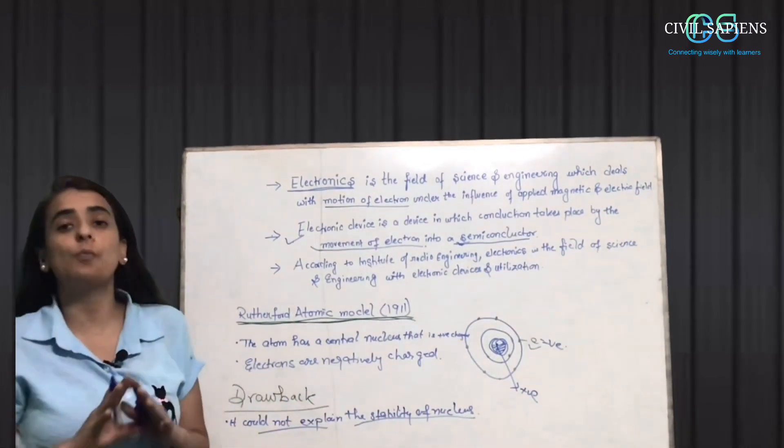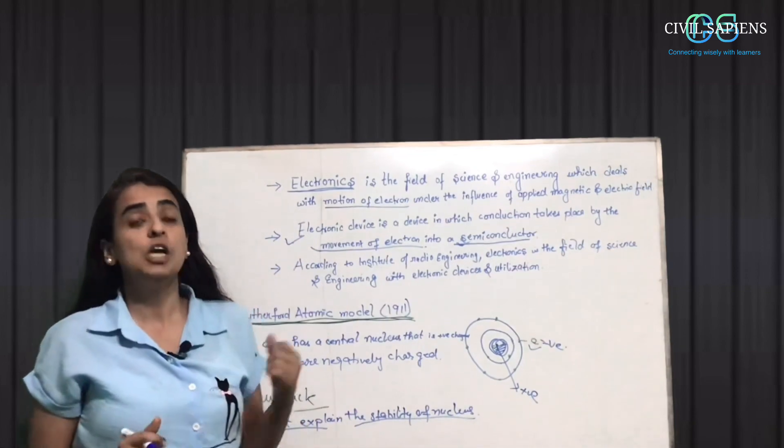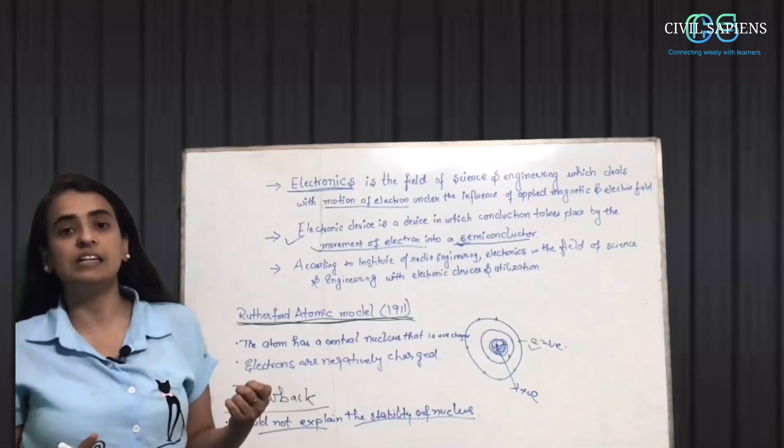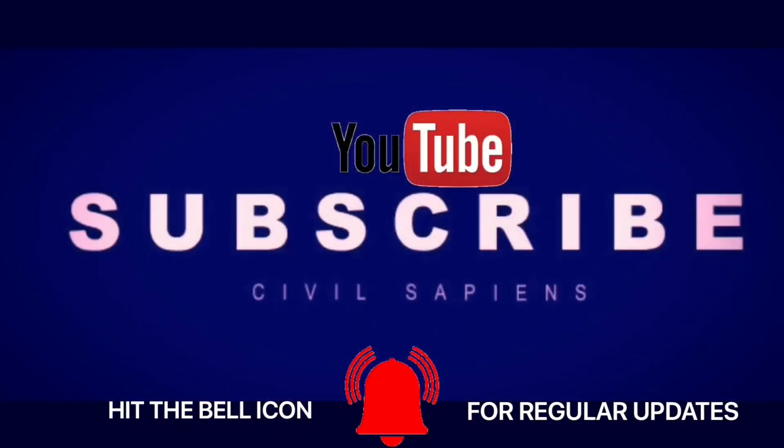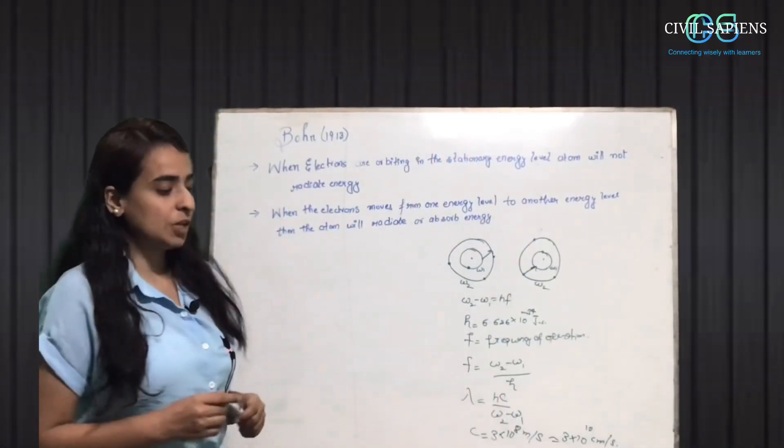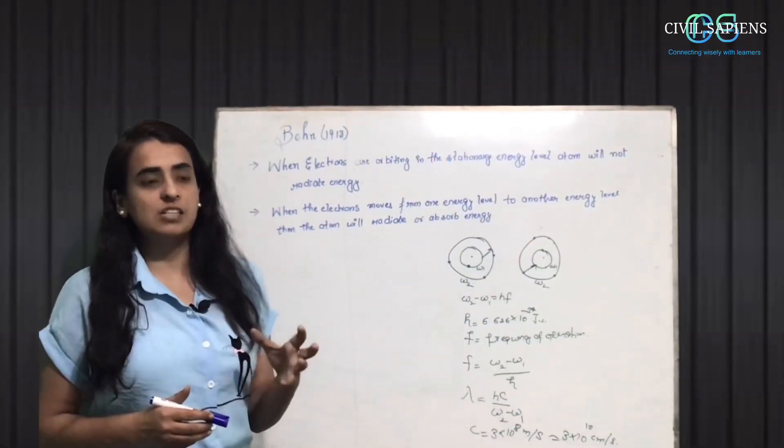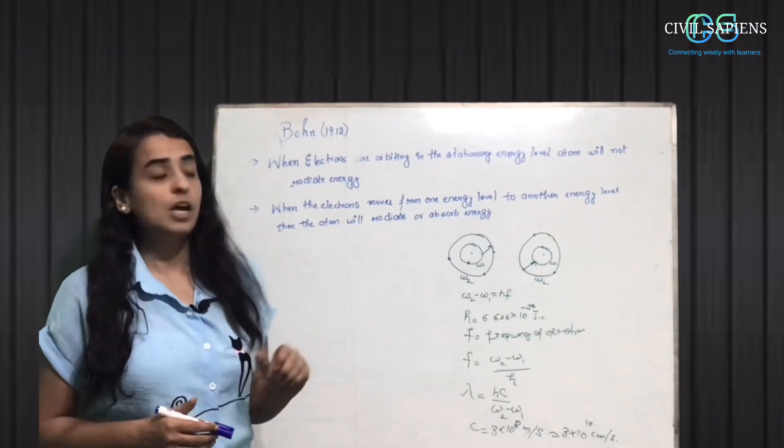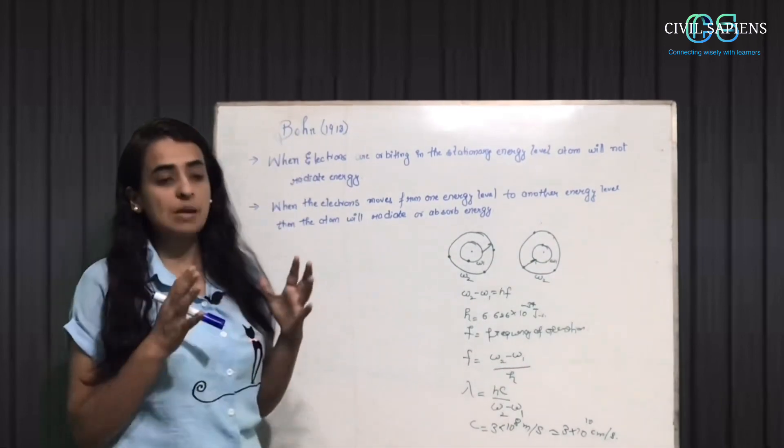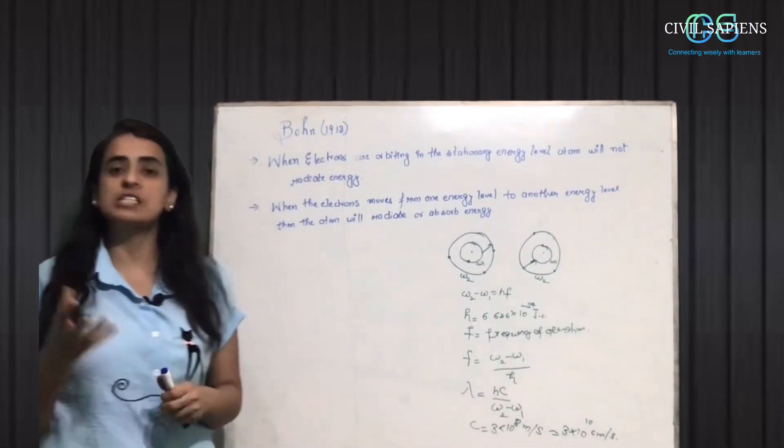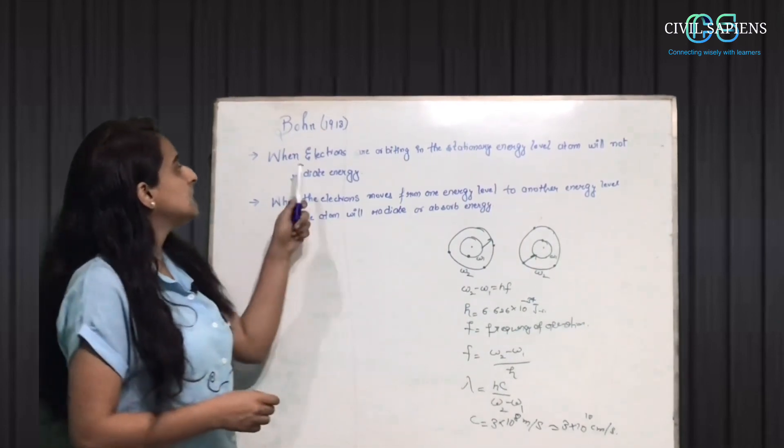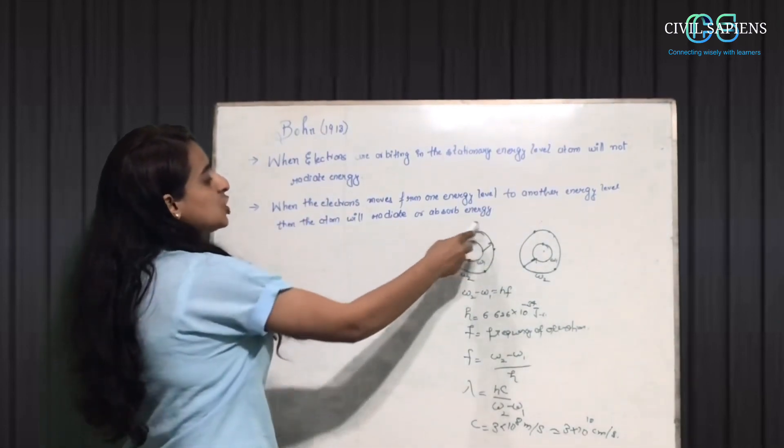The stability of the nucleus was not able to be explained. Then Bohr's model came in 1913. Bohr explained the stability of the nucleus. They said that the electrons circulate in stationary orbits.